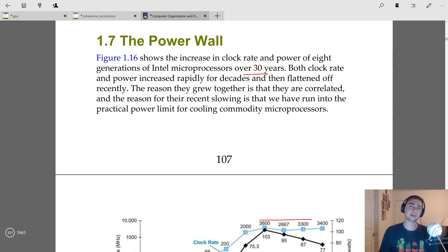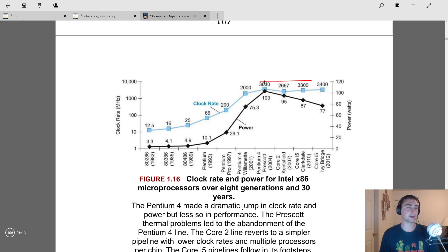Hey everyone, I'm Nick, and in this episode of Computer Organization and Design we're going to talk about the power wall. In this section of the book we're going to first go over a chart of Intel microprocessors over 30 years showing both clock rate and power trends over time. As we can see over here...